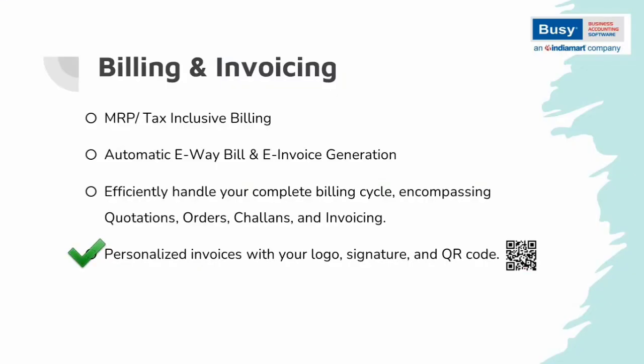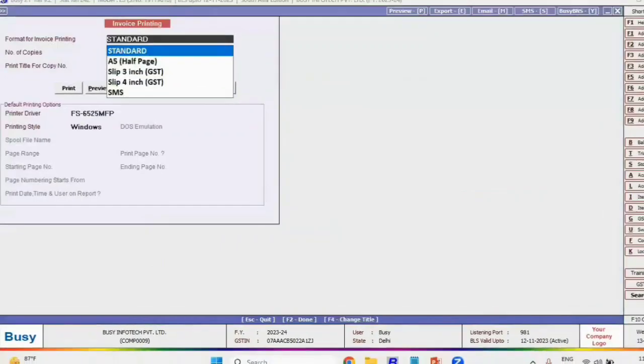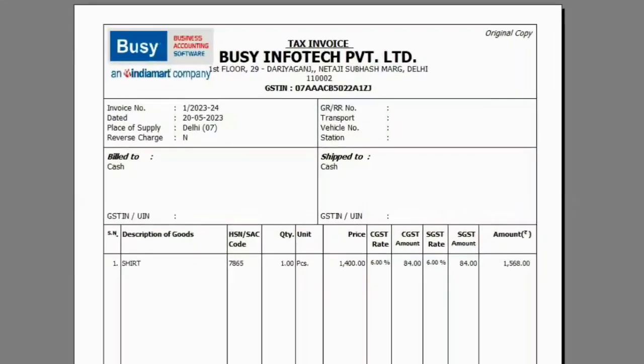In Bizi, users can configure invoices according to their business needs, including adding the company logo, a dynamic QR code, and the user signature. You can print a sale invoice in Bizi to see how to configure the company logo, QR code, and user signature.